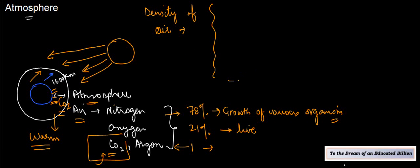So if we talk about the 1600 km, the density is more towards the land part of the earth, and as you move up, the density decreases.